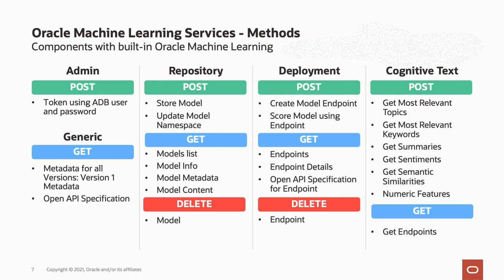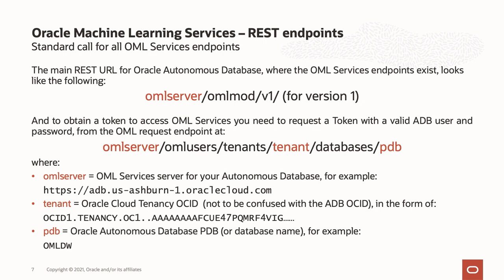So how does this work? For every Autonomous Database in every Oracle OCI data center, you have a specific URI and URL for your data center. For anything to do with OML Services, you're going to need your OML server, slash OML-mod slash V1. The OML server definition depends on where your database is running. If your Autonomous is running on Ashburn, the URL is HTTPS adb.us-ashburn-1. If you're running in San Jose, Phoenix, or Frankfurt, that HTTPS URL changes accordingly.